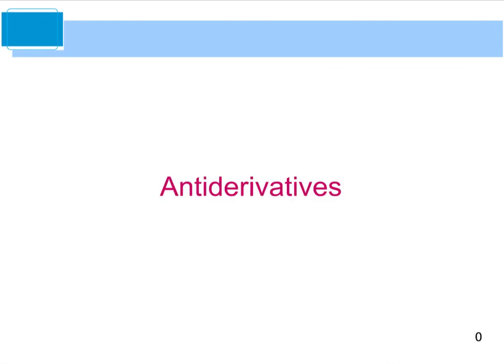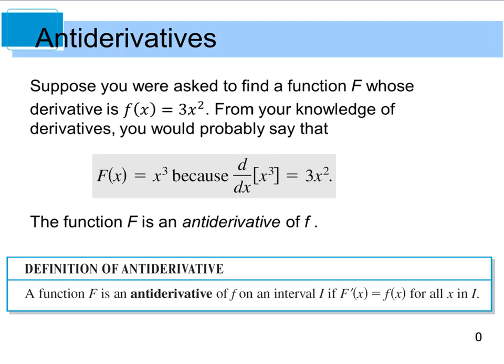Let's begin with antiderivatives. I want you to ask yourself how you would go about finding a function F whose derivative is f(x) = 3x². From what you already know about derivatives, you would probably say that F equals x³, because if you take the derivative of x³, you get 3x².